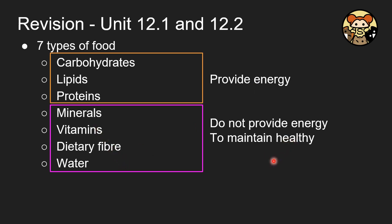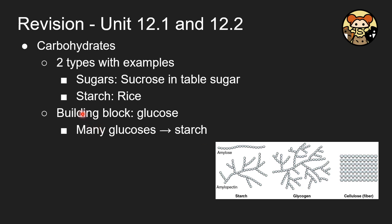The first three types — carbohydrates, lipids, and proteins — all provide energy, while the remaining four do not provide energy but are critical for our health. Let's talk about carbohydrates first. There are two types: sugars, like sucrose in table sugar, and starch, like the kind found in rice. The building block of carbohydrates is glucose.